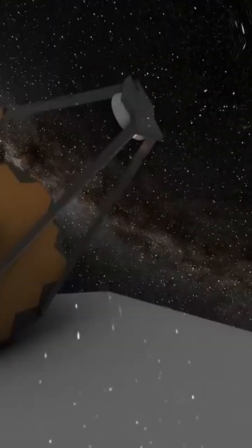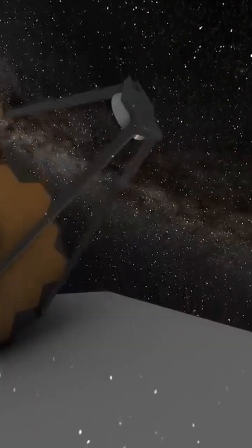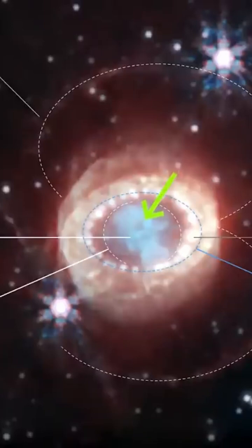The dust is so dense that even the near-infrared light that Webb detects can't penetrate it, shaping the dark hole in the keyhole.